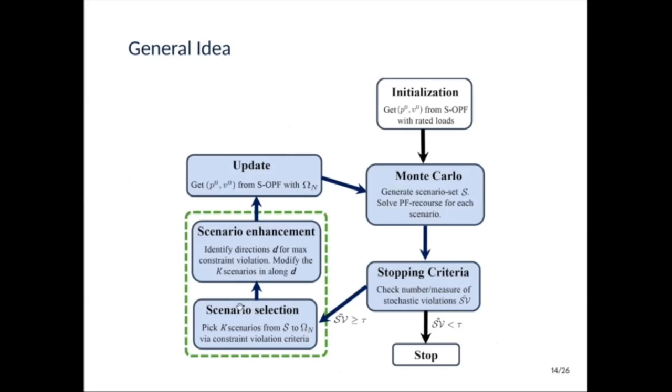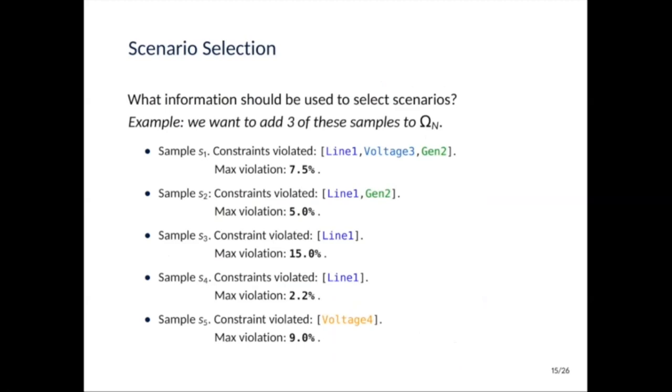And the approach we have in mind adds two steps instead of adding random scenarios to set omega n. So first, you will pick a case scenario according to a constraint violation criteria, I'll explain it in the next slides. And once you've selected these good scenarios, you will enhance them by identifying some direction and I'll explain what it is later.